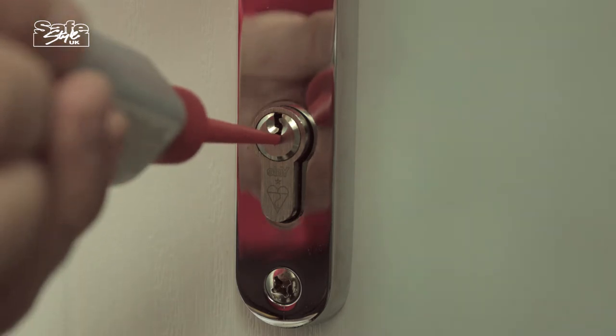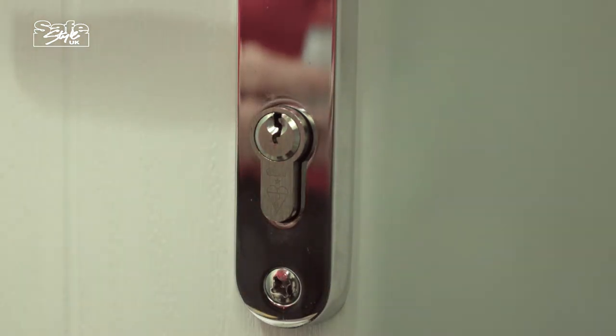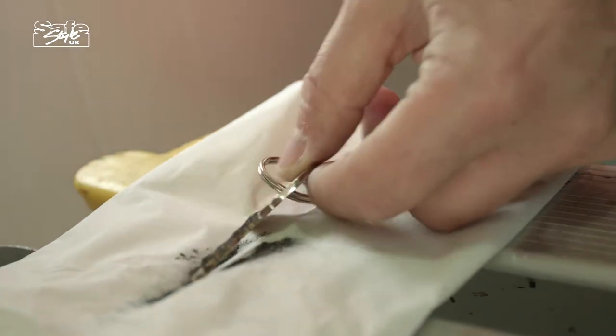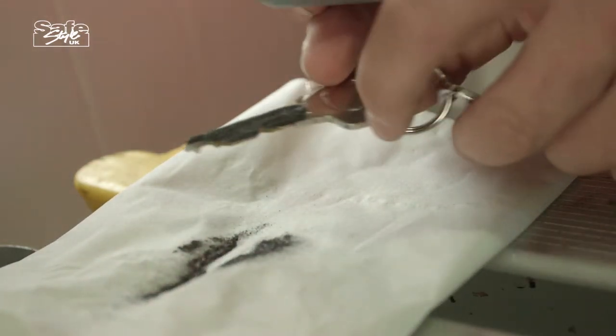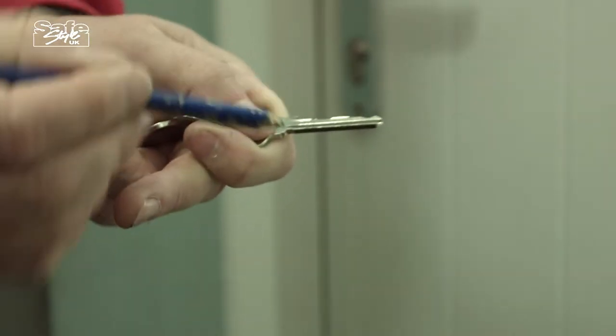Put a small amount of graphite powder inside the door lock to ease any friction inside, making sure not to put in too much. You will also want to put some of the powder onto both sides of the door key. If you don't have any graphite powder, you can use a pencil.